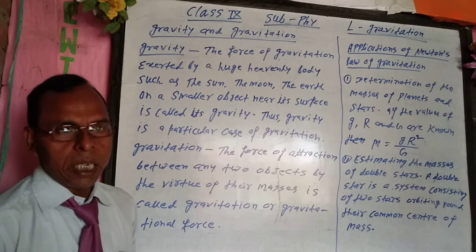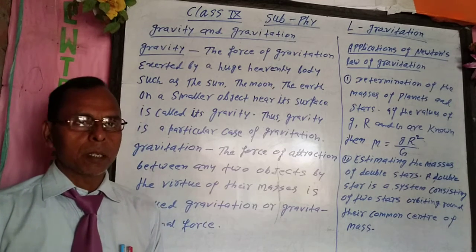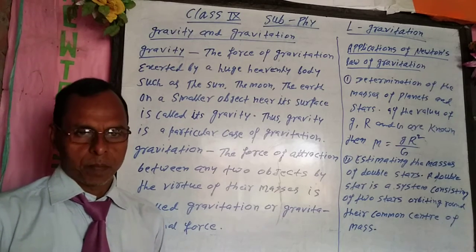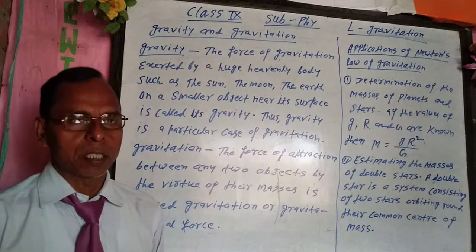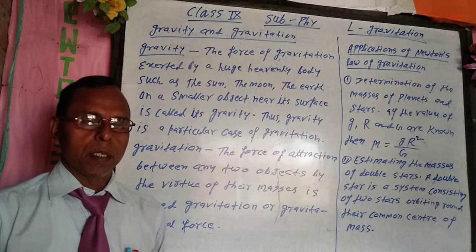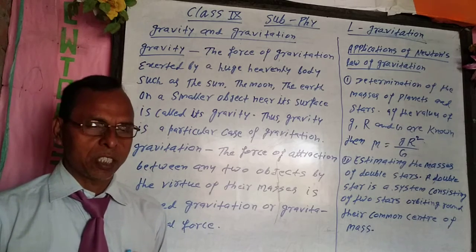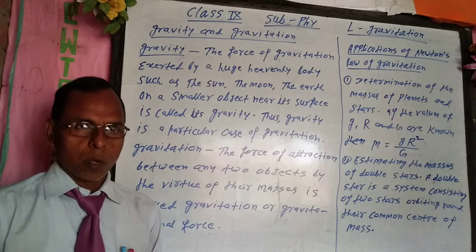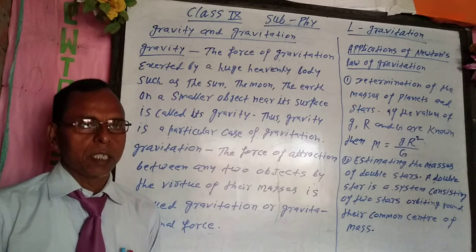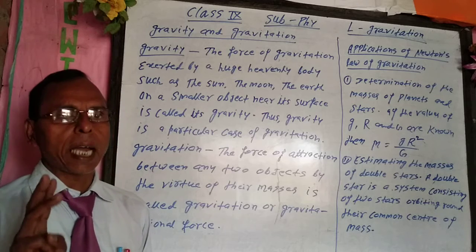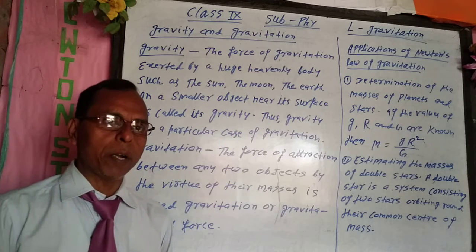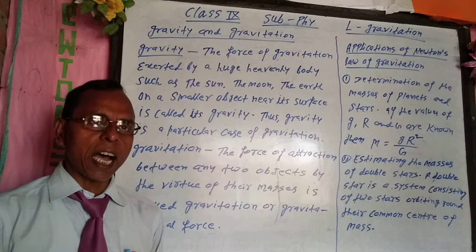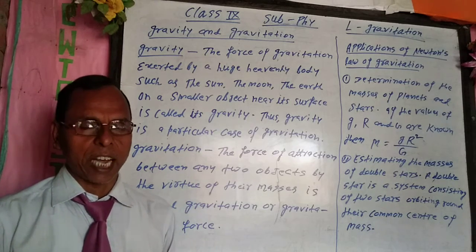In our universe, there are three types of stars. First, fixed stars. Second, variable stars. Third, binary stars.